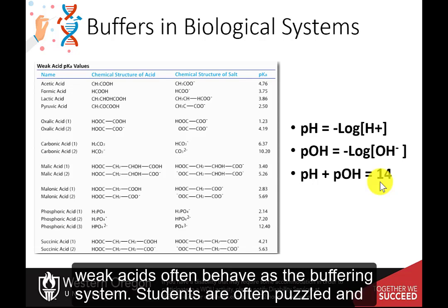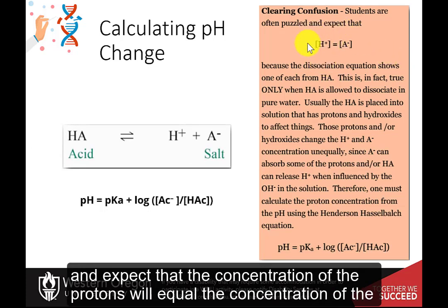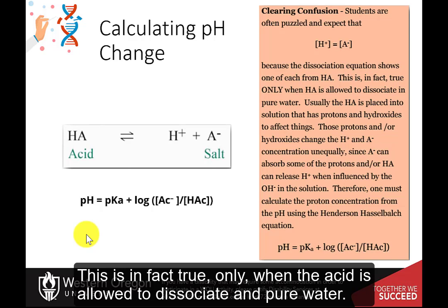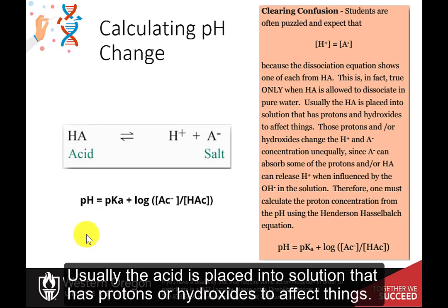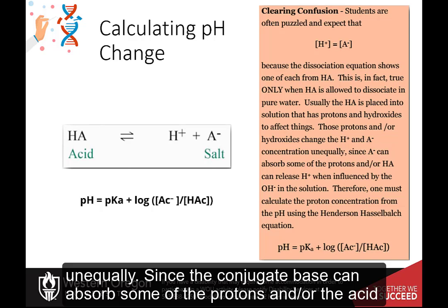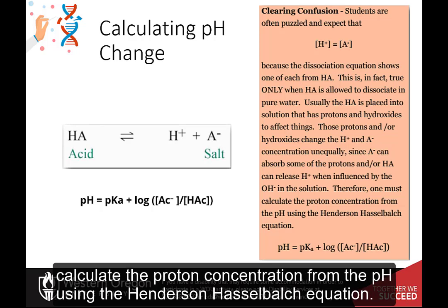Within biological systems, weak acids often behave as this buffering system. Students are often puzzled and expect that the concentration of the protons will equal the concentration of the conjugate base because the dissociation equation shows one of each from the acid. This is in fact true only when the acid is allowed to dissociate in pure water. Usually, the acid is placed into a solution that has protons or hydroxides to affect things. Those protons and/or hydroxides change the protons and the conjugate base concentration unequally, since the conjugate base can absorb some of the protons and/or the acid can release protons when influenced by the hydroxide in the solution. Therefore, one must calculate the proton concentration from the pH using the Henderson-Hasselbalch equation.